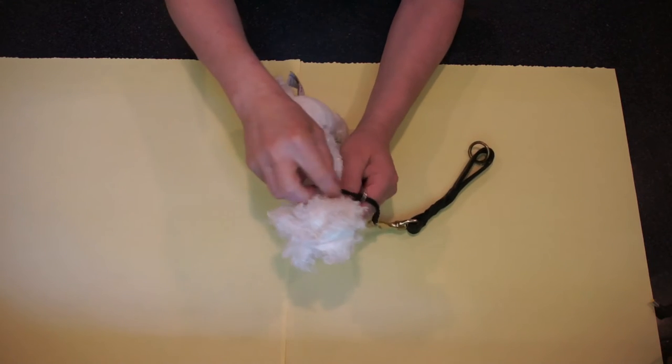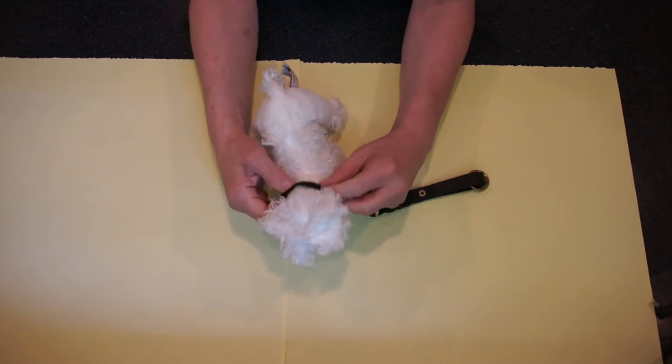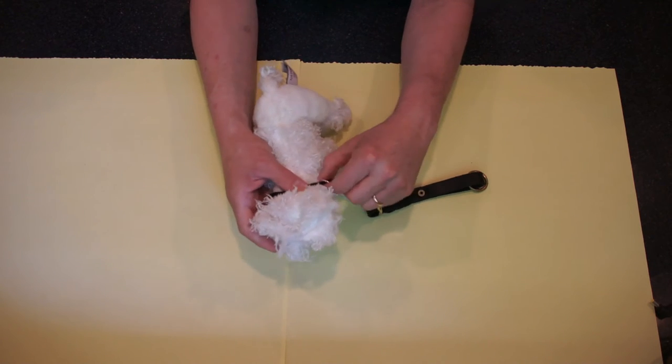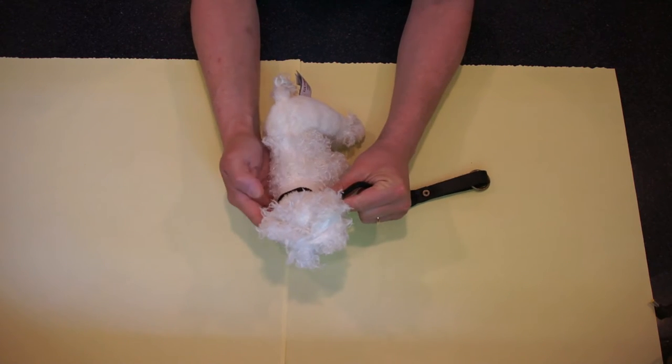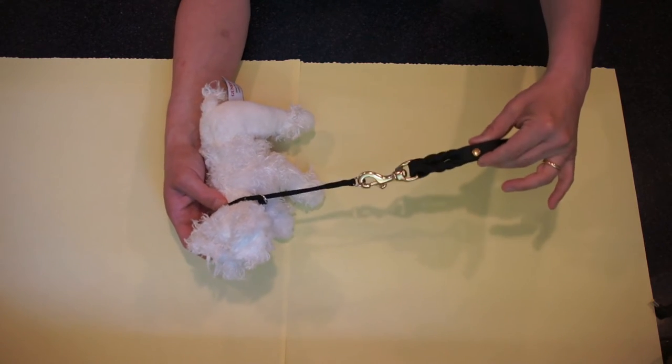So again you can put the collar on and when you look down at the dog you can see where it goes across the top of the neck over the far side of the neck over here and that's a straight line from your leash.